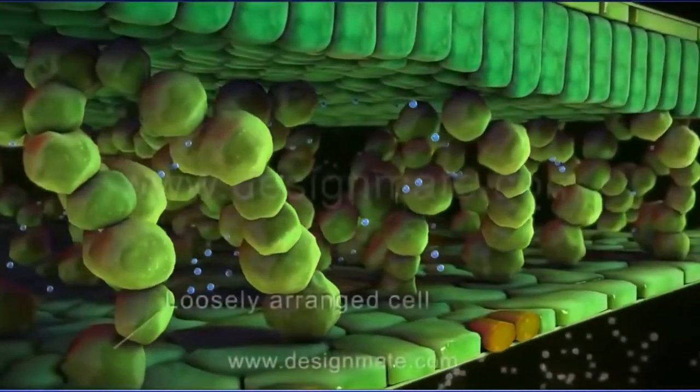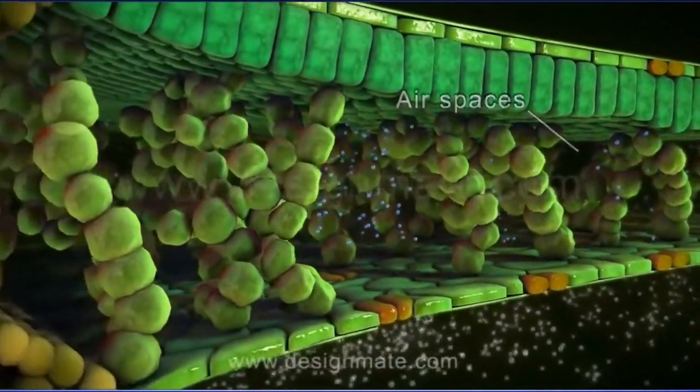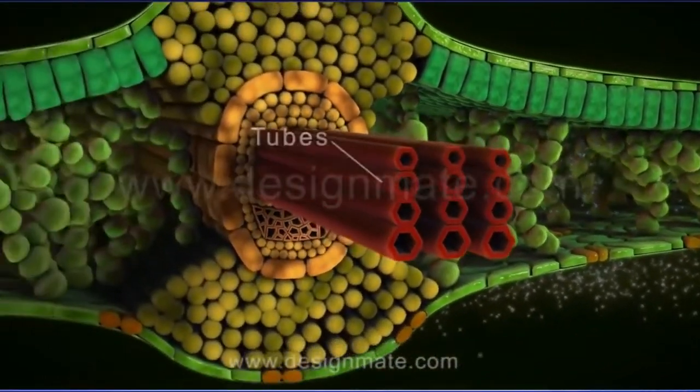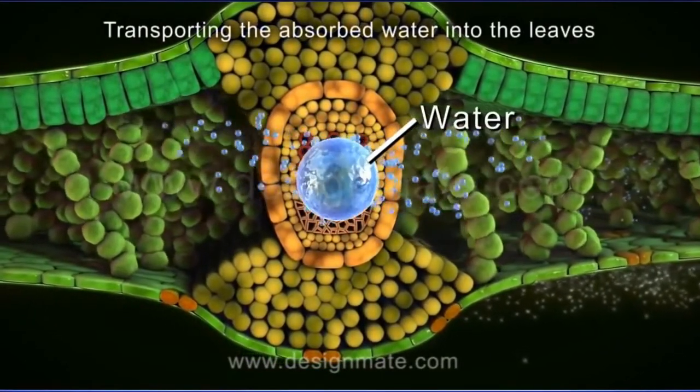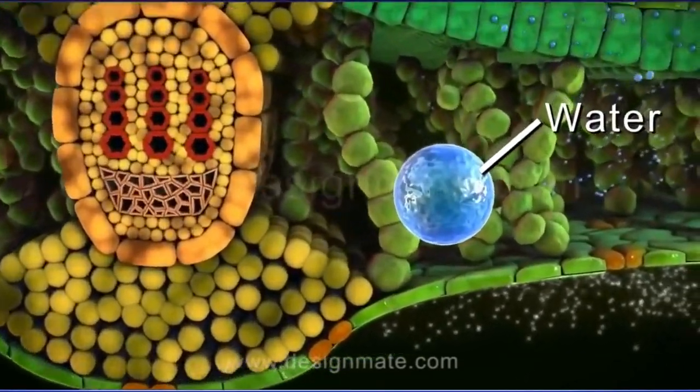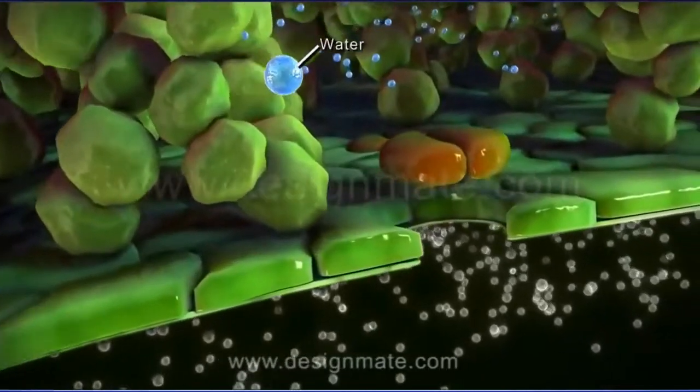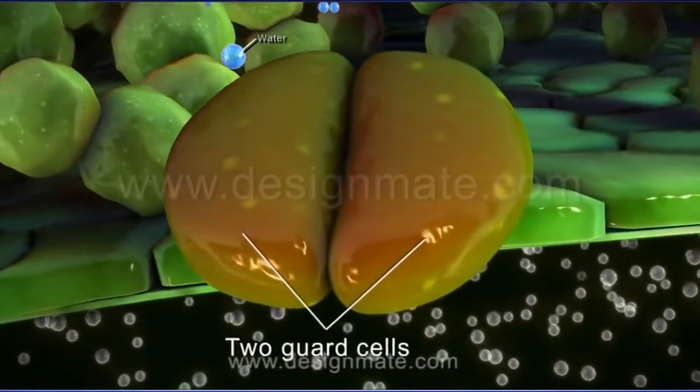The next layer has loosely arranged cells with large air spaces. The section also shows tubes specific for transporting the absorbed water into the leaves. The lower layer has many pores called stomata. Each stoma is surrounded by two guard cells which regulate opening and closing of the stomata.